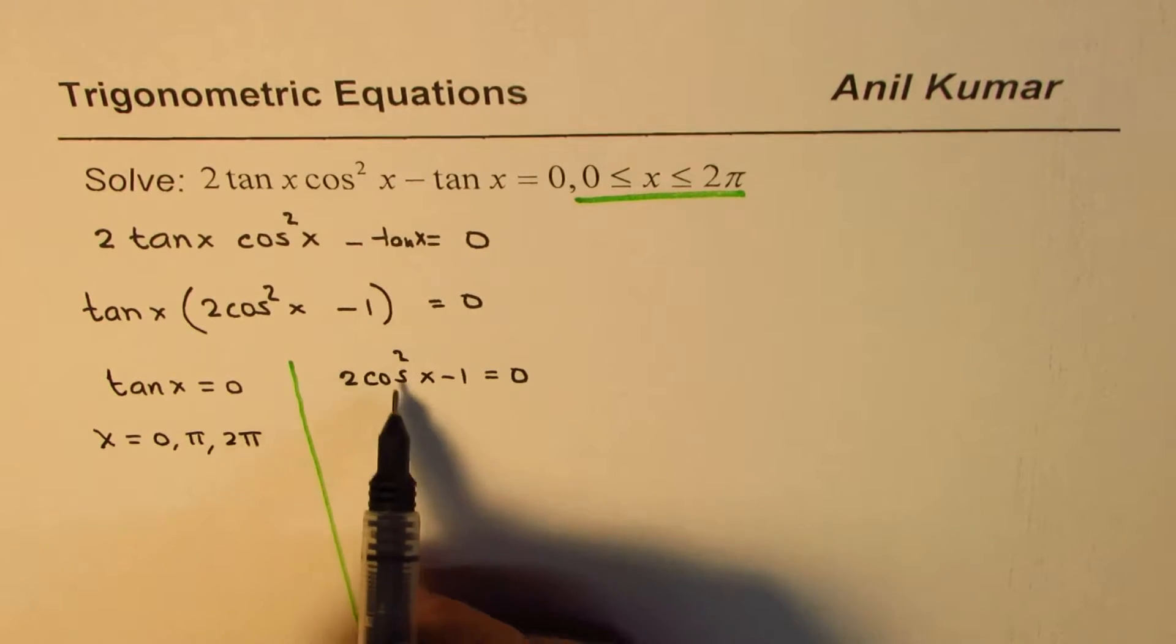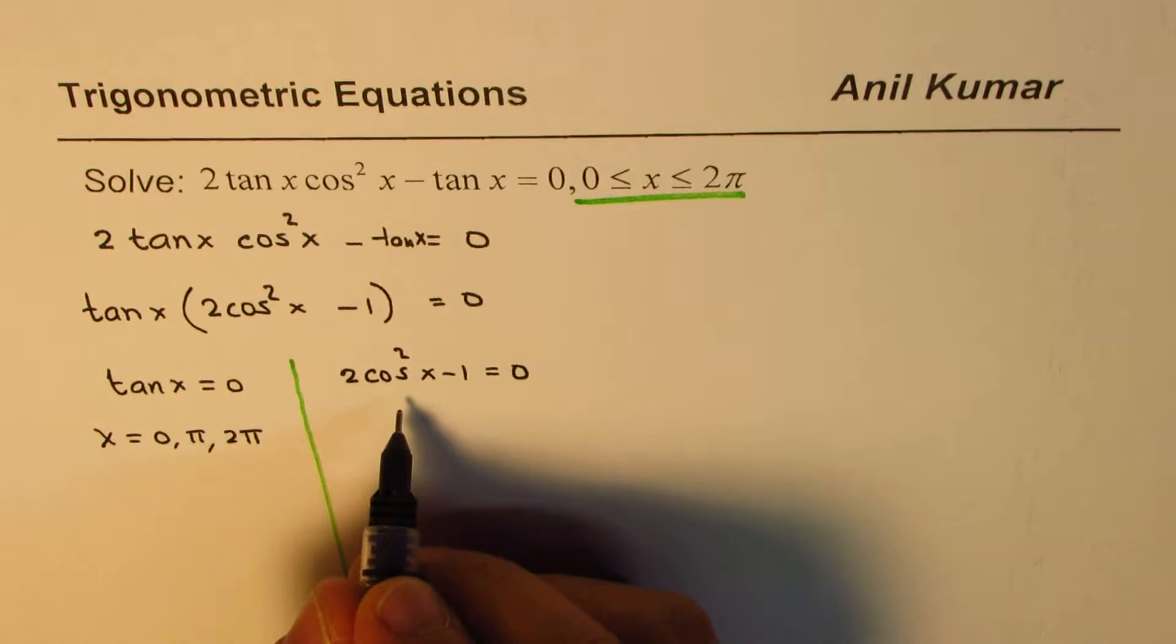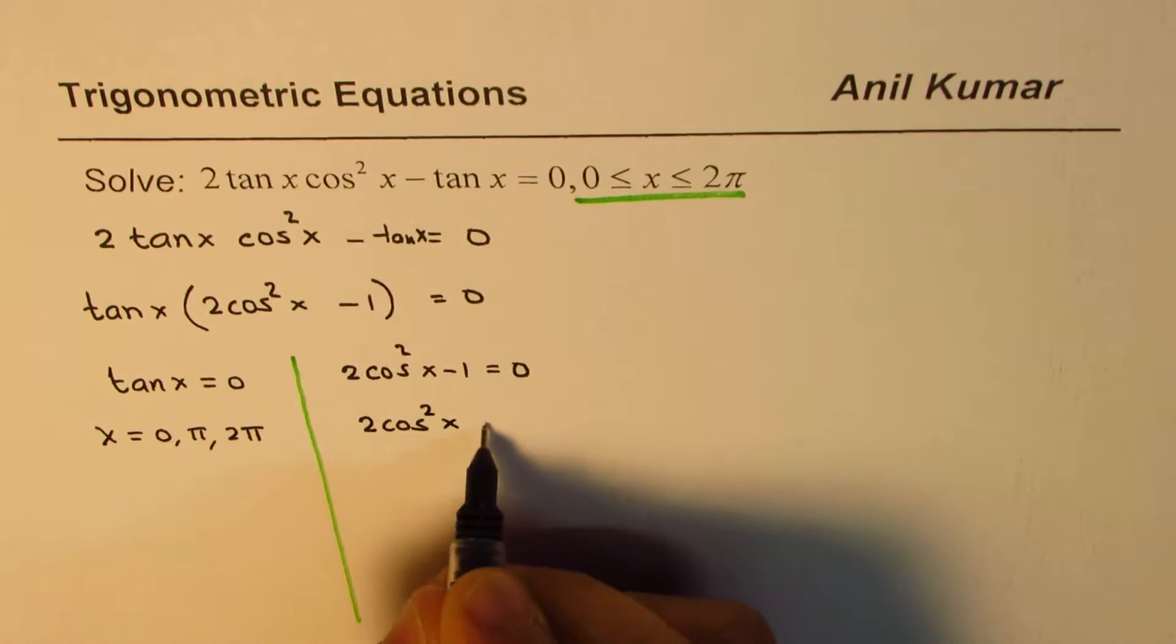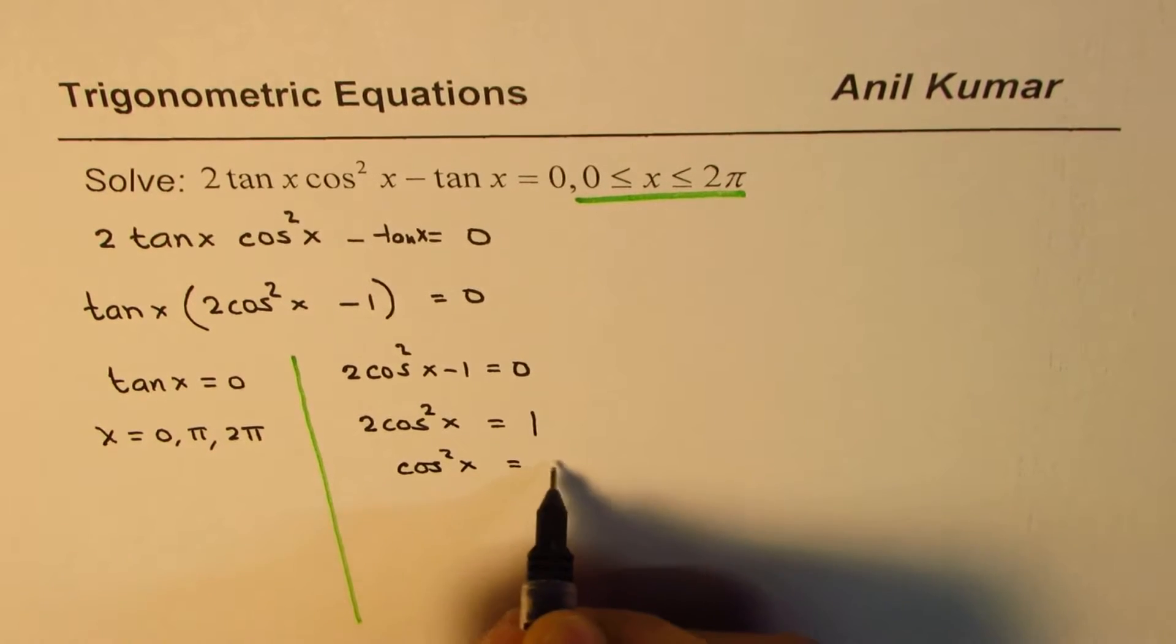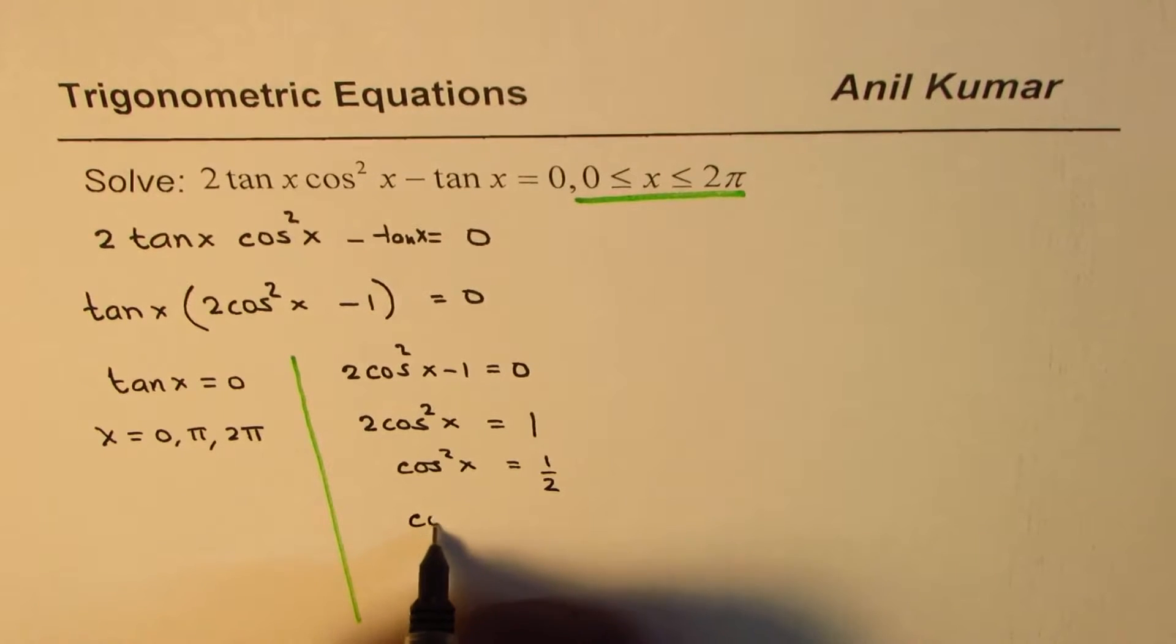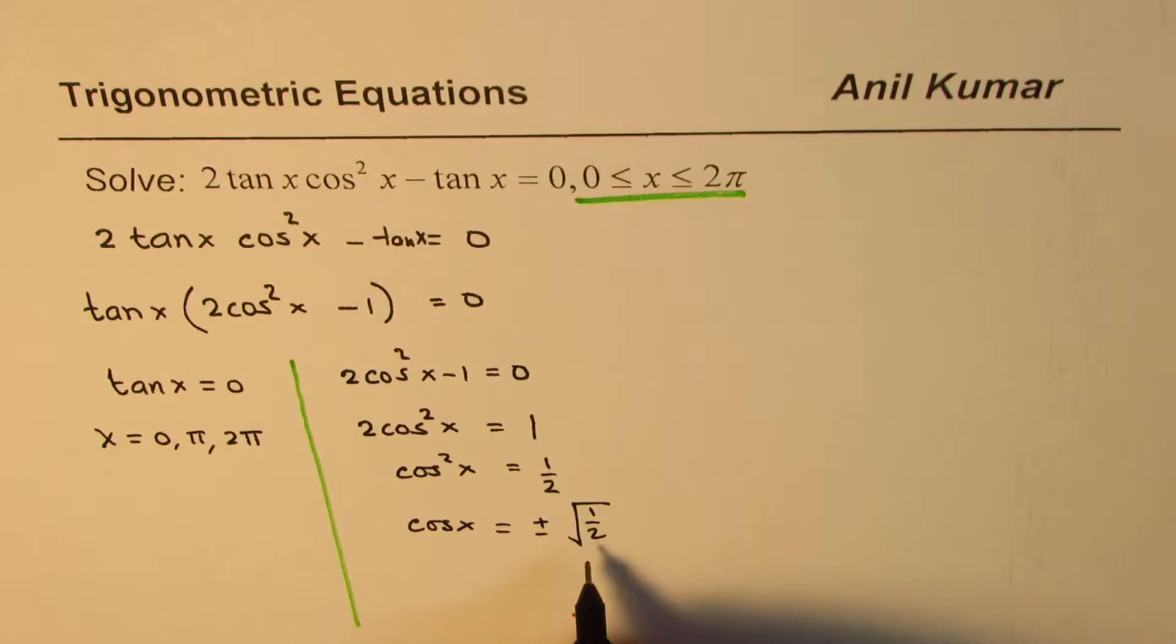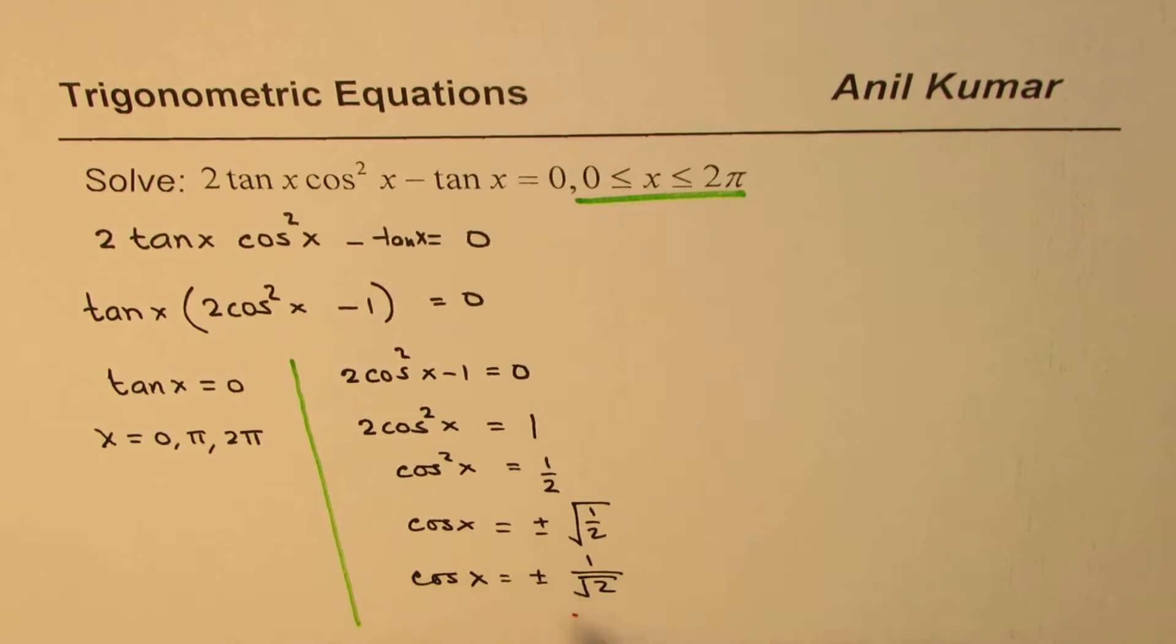How about this part: 2 cos²x minus 1 equals 0? We can solve it further. We could write this as 2 cos²x equals 1, or cos²x equals 1/2, or cos x equals ±√(1/2). So we're looking for cos x equal to ±1/√2.